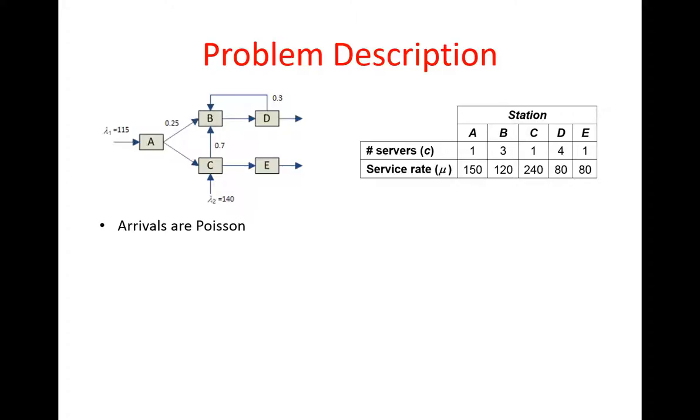We're assuming that arrivals are all Poisson and we have exponentially distributed service times, and all the rates are given in parts per hour.